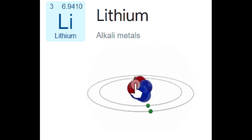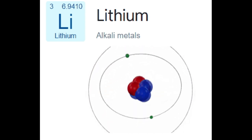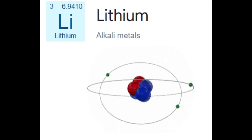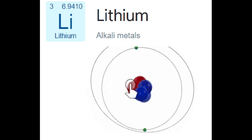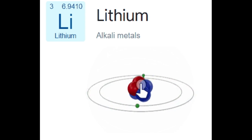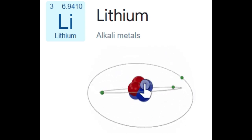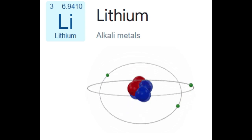When cut, it exhibits a metallic luster, but moist air causes it to quickly dull to a silvery gray, then black tarnish. It never occurs freely in nature, but only in ionic compounds, such as pegmatitic minerals, which were once the main source of lithium.